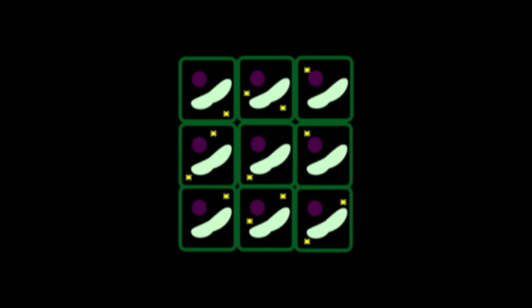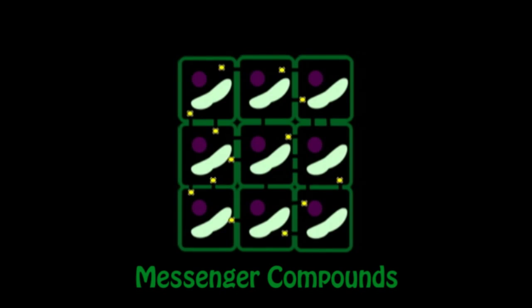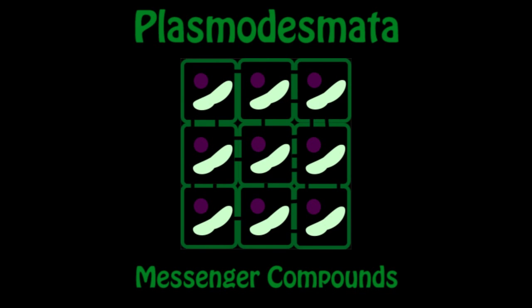Plant cells interact and communicate with each other in two ways: by secreting messenger compounds to surrounding cells and by direct connections between cells through plasmodesmata.